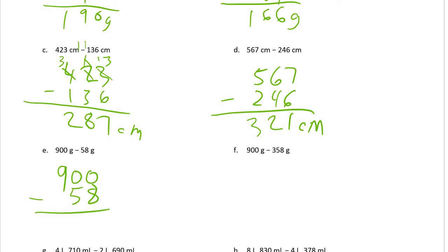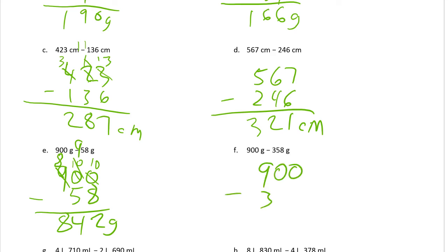Now we have two zeros in our minuend, which means we have to go all the way over to the hundreds. We break up a hundred — we'll have 8 hundreds left — and we get 10 tens. But we need ones too, so we break up one of those tens, leaving 9 tens, and we get 10 ones. 10 ones minus 8 ones is 2. 9 tens minus 5 tens is 4 tens.